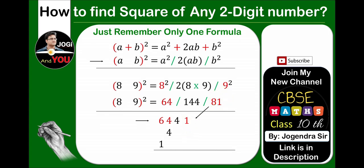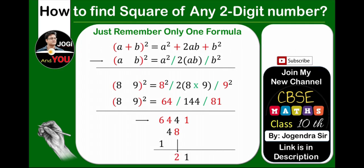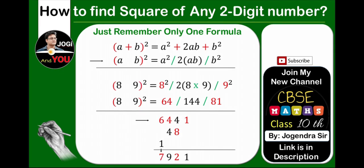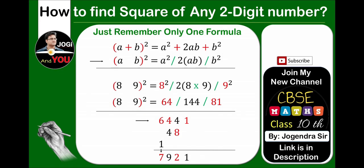This 81 will be placed with the same method. Place 1 next to 4, place 8 before 1 below 4. At this stage, we have done all the things. Now, add these all three lines: 1, 4 plus 8 is 12, carry 1. 4 plus 4 plus 1 is 9. 6 plus 1 is 7. So, square of 89 is 7921. This is our answer.